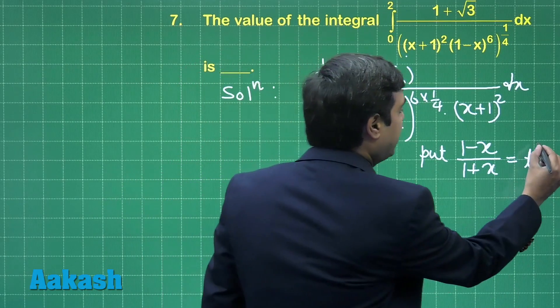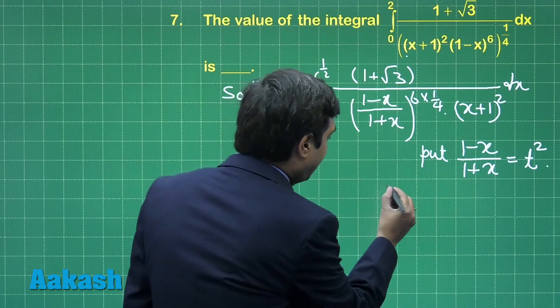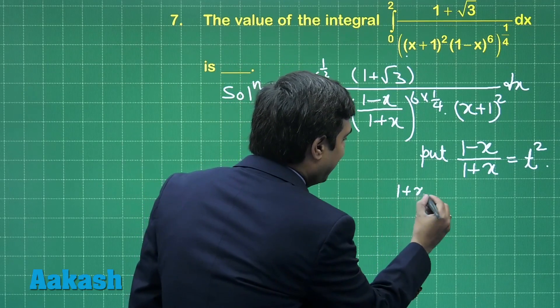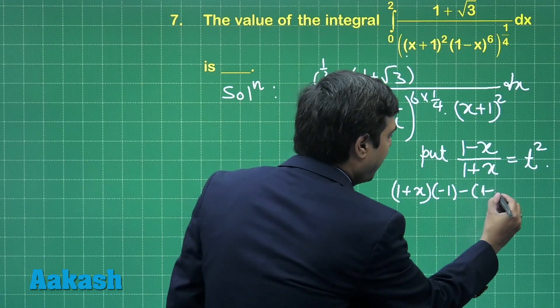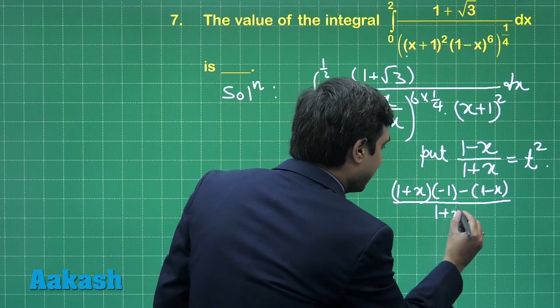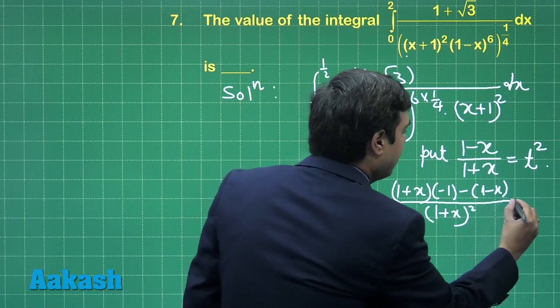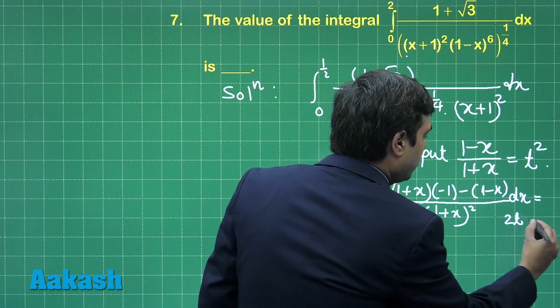In order to eliminate the radical sign, we can also take it as t square. Simply differentiating on each side, we have (1 plus x) into minus 1 minus (1 minus x) divided by (1 plus x) whole square dx is equal to 2t dt.